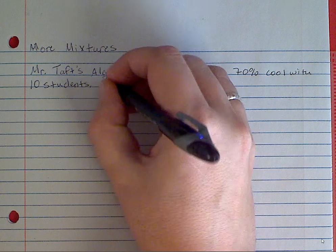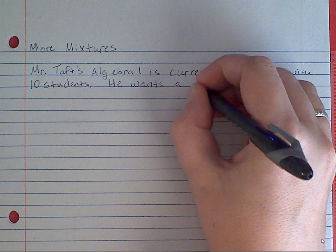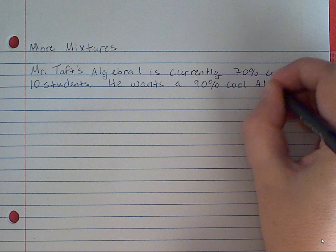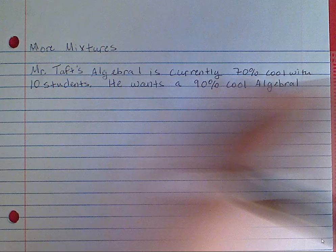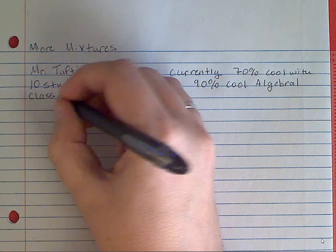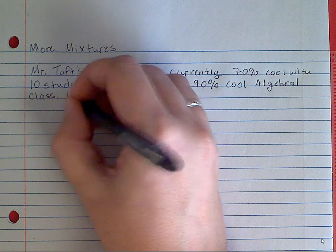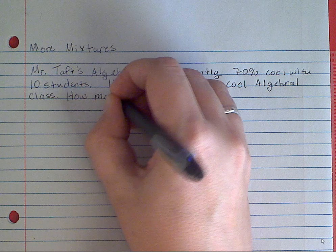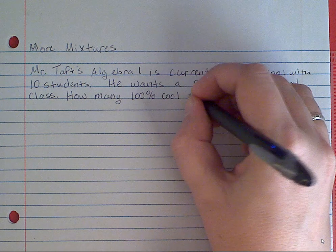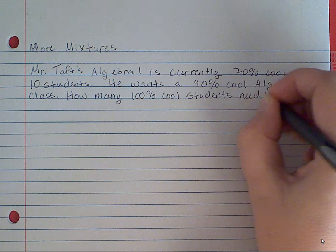He wants a 90% cool Algebra 1 class. How many 100% cool students need to be added?